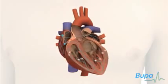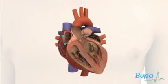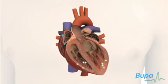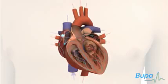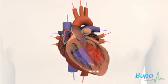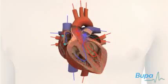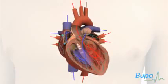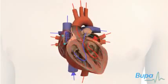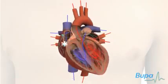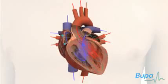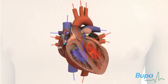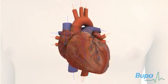Nerves supplying the heart change the rate at which impulses are sent across the heart muscle to meet the needs of the body. Together, the chambers, valves, vessels and electrical impulses enable blood to be pumped around the body effectively so you get the oxygen you need.